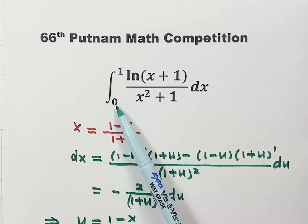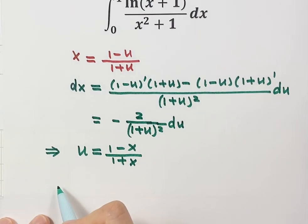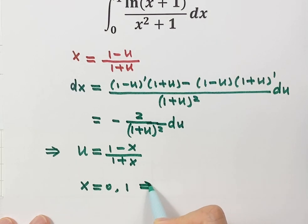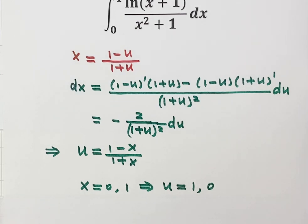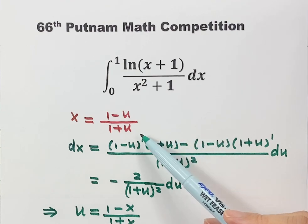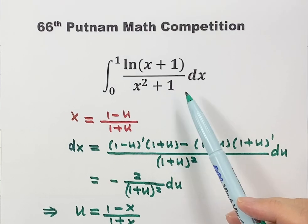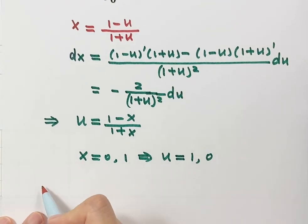For x, the lower limit is 0 and the upper limit is 1. Substituting into u = (1-x)/(1+x), the lower limit for u becomes 1 and the upper limit becomes 0. We now use I to denote the original integral.